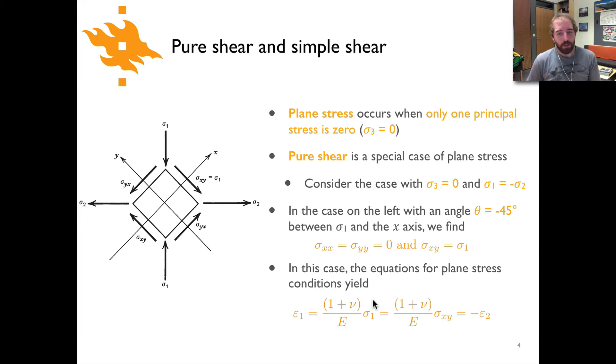Now from the equations of plane stress, which I'm not going to show the derivation of, you can take the equations that apply for plane stress in an elastic material. What you'll find is epsilon one, the maximum principal strain, is simply one plus Poisson's ratio (1 + ν) over Young's modulus e times sigma one. And since we know sigma one is equal to sigma xy, we can plug in sigma xy here and set that equal to minus epsilon two, the minimum principal strain.